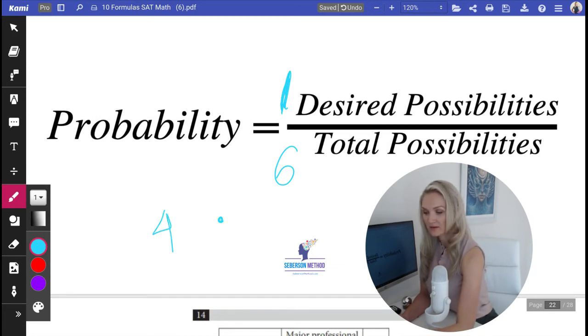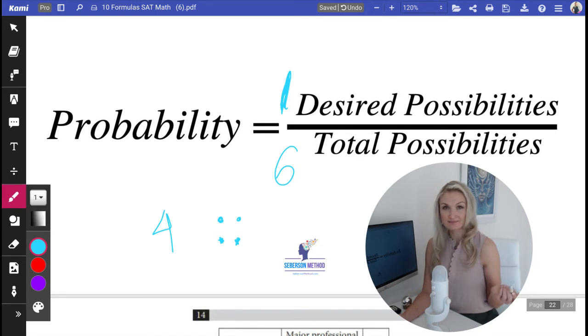We want to get four on this side. How many fours are in the dice? One. So therefore, we're going to have one over six.